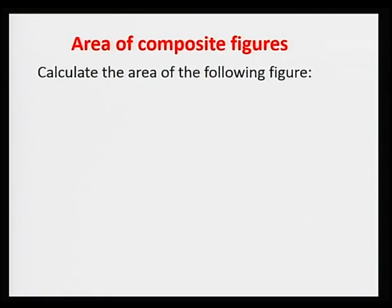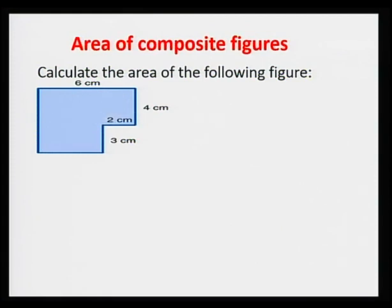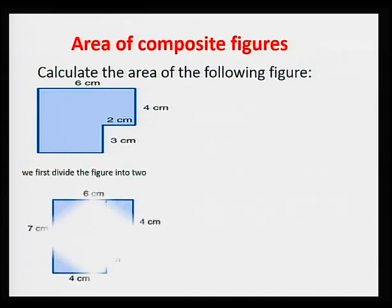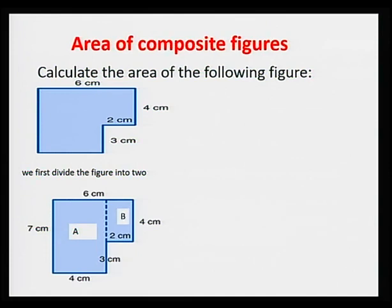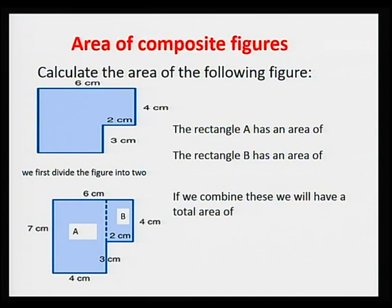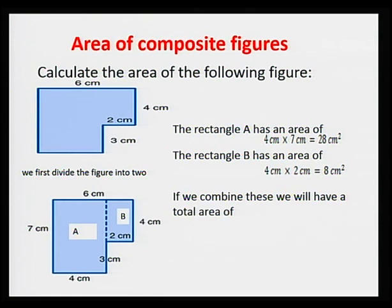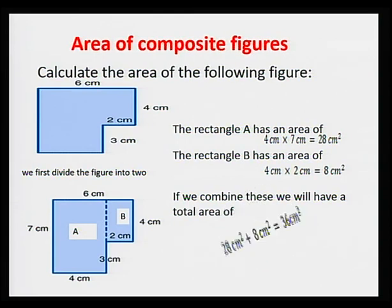Now let's see how to calculate area of composite figures. In this example, we have to calculate the area of an L-shaped block. To calculate the area of this figure, we must first divide it into two parts to form two rectangles. Let's call the first one rectangle A and the second one rectangle B. Area of rectangle A is 4 cm by 7 cm, equal to 28 cm². The area of rectangle B is 4 cm times 2 cm, equal to 8 cm². Combining these two, we have a total area of 36 cm². So the area of this composite figure is 36 cm².